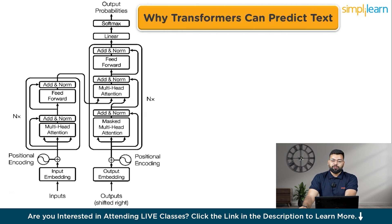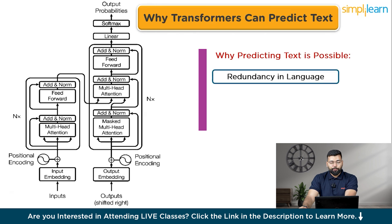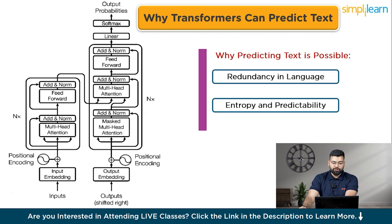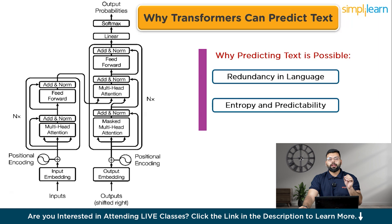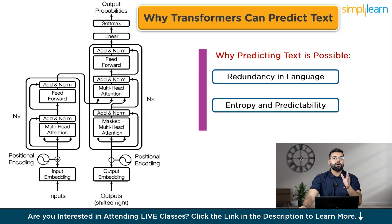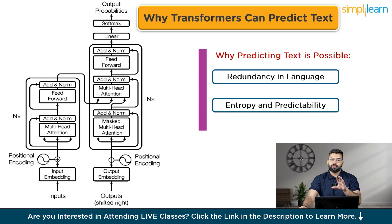Transformers can predict text due to two main reasons: patterns seen in language, and entropy and predictability. The key concepts are: the attention mechanism, which enables the model to weigh the importance of different tokens improving context understanding; positional encoding, which helps the model understand the order of tokens crucial for meaning; and multi-head attention, which improves the model's ability to capture different relationships by focusing on various parts of the sequence simultaneously. This architecture allows transformer models to handle long sequences and complex language tasks effectively.